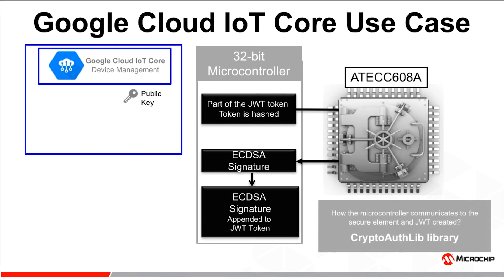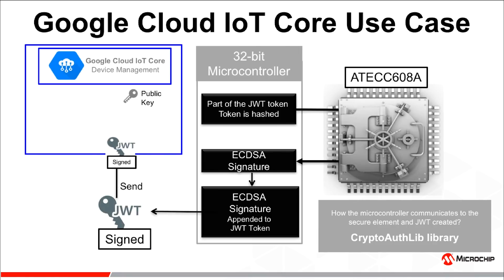To communicate between the microcontroller and the secure element, Microchip offers the CryptoAuthLib library, which also helps to create the JWT. The signed JWT token is then presented to the device management function of Google IoT Core, which uses the previously stored public key to verify that the signed JWT token is genuine and authorize the rest of the communication.